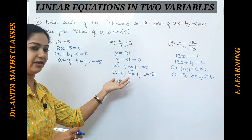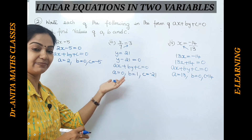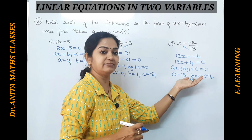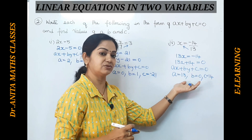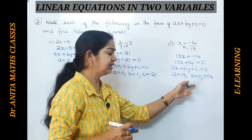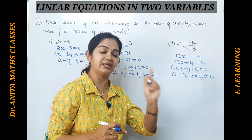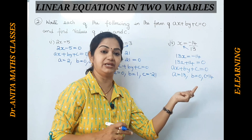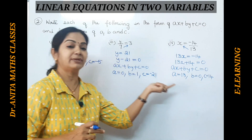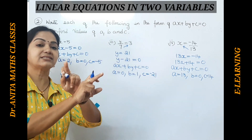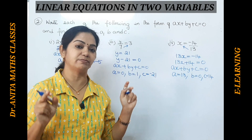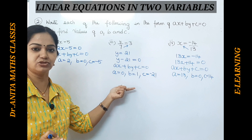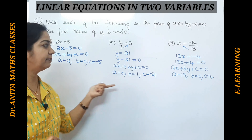Notice that in one case we don't have an ax term so a = 0, and in the other we don't have a by term so b = 0. Either a or b can be zero, but the condition is that a and b must not simultaneously both be zero for linear equations in two variables. Please pause the video and note it down.